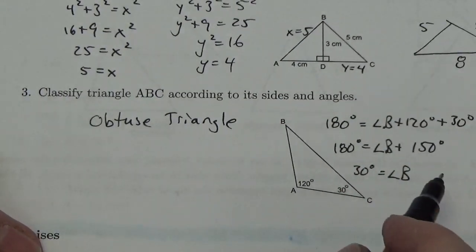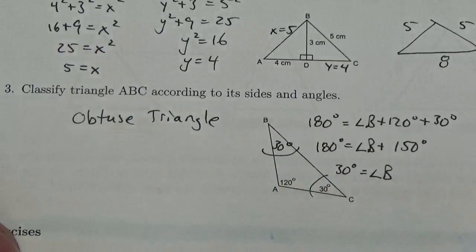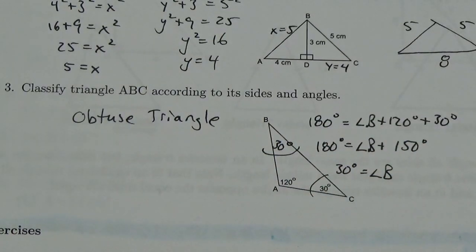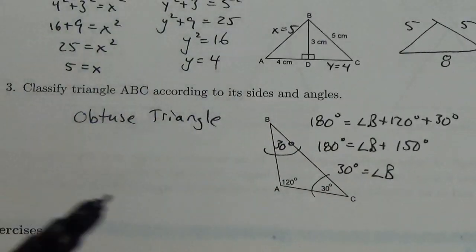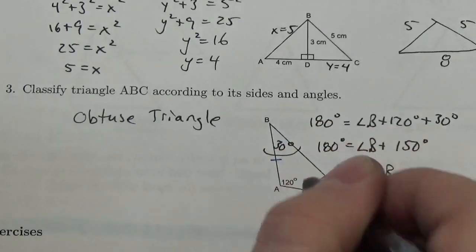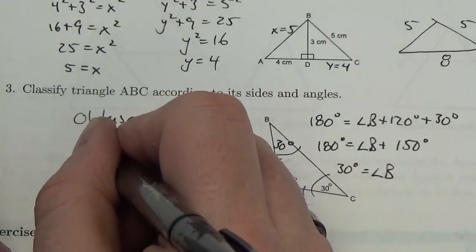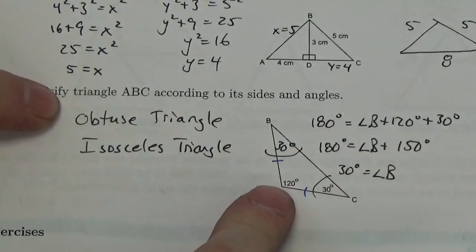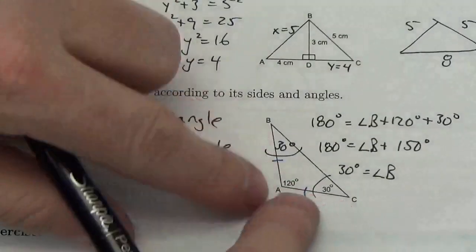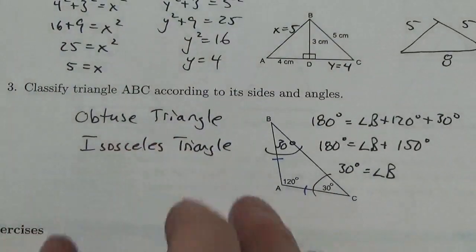If I subtract 150 from both sides, 180 minus 150 will be 30 degrees. So this angle here is 30 degrees. Because this angle and this angle are both 30 degrees — a large angle opens up to a large side and a small angle opens up to a small side — if these two angles are the same, then they must be opening up to the same side. Therefore, this must be an isosceles triangle. Not only is it obtuse because of this angle, but because these two angles are the same, these two sides are the same. BC is going to be the largest side. So this must be an isosceles triangle.